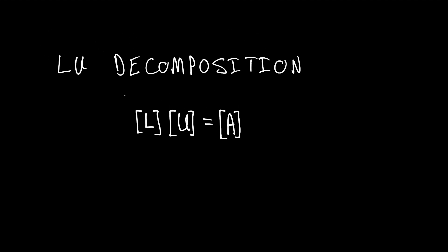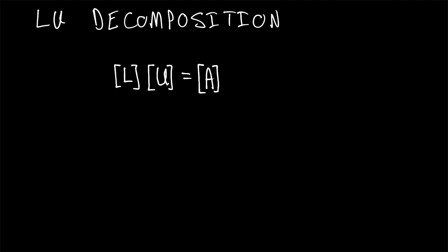Today we're going to be considering the LU decomposition of matrices, by which we take matrix A and decompose it into a lower triangle matrix L and an upper triangle matrix U, such that the product of matrices L times U will result in the original matrix A.